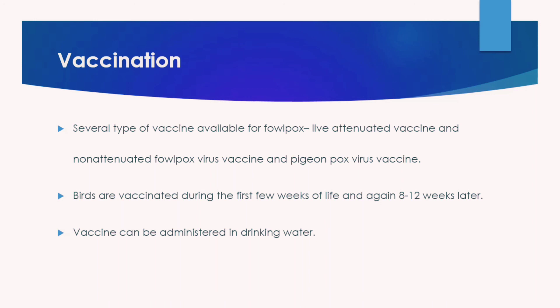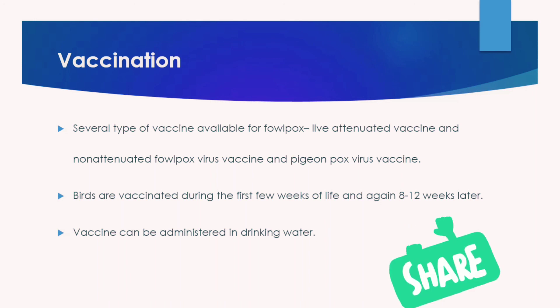Birds are vaccinated during the first few weeks of life, with a second or booster dose given 8 to 12 weeks later. The fowl pox vaccine can be administered through drinking water rather than directly via eye or mouth droplets.